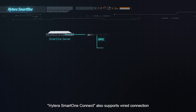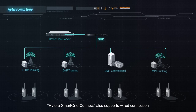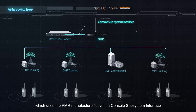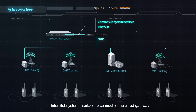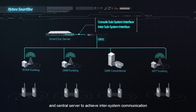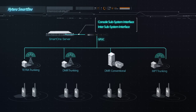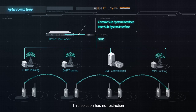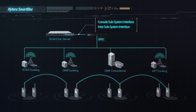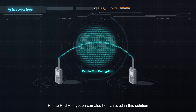Hytera SmartOne Connect also supports wired connection, which uses the PMR manufacturer system console subsystem interface or inter-subsystem interface to connect to the wired gateway and central server, achieving inter-system communication. This solution has no restriction for inter-system calls and messages, and end-to-end encryption can also be achieved.